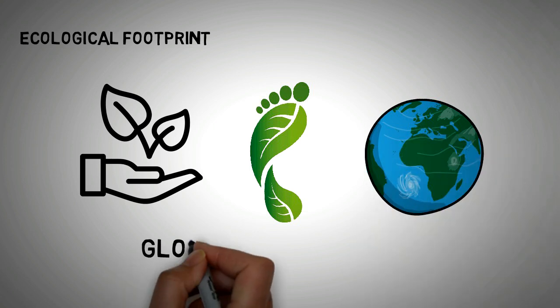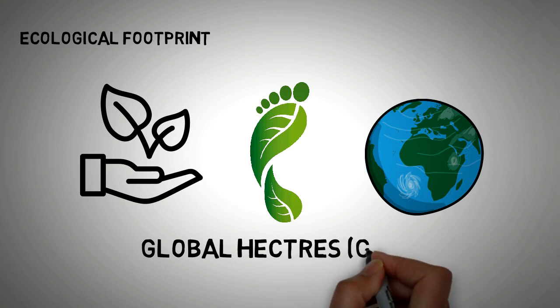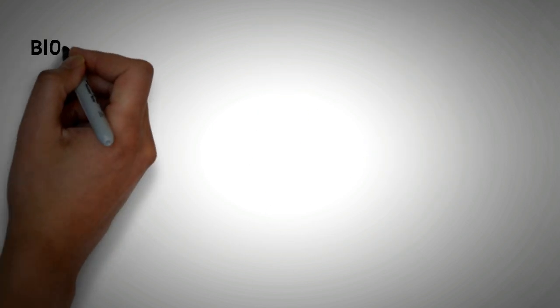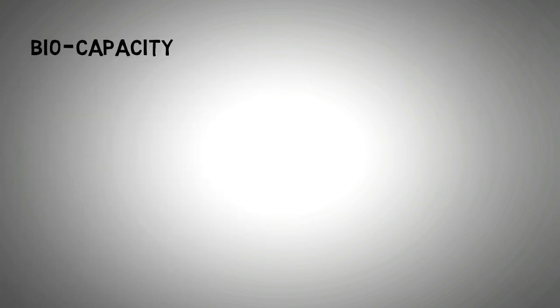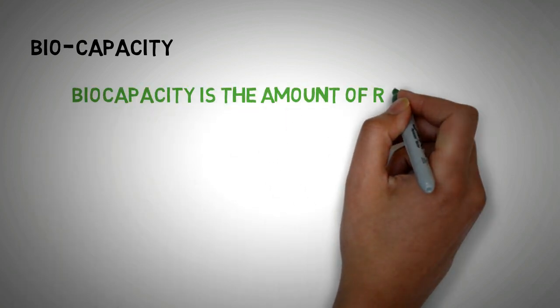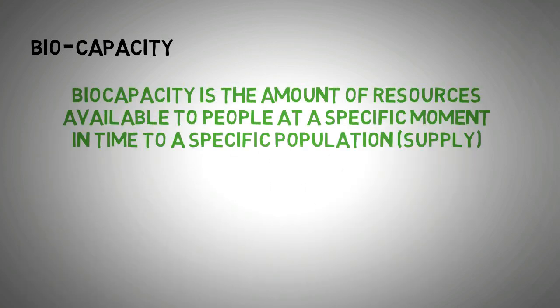Global hectares is normally abbreviated as GHA. The activity can be for an individual, a household, an organization or it can be extended to a region, city, town or country. Once the ecological footprint is available, we can contrast it against the bio-capacity to check the level of sustainability or unsustainability.